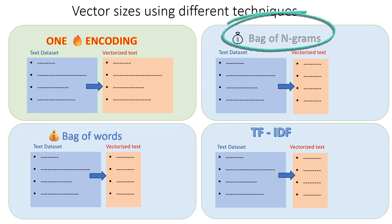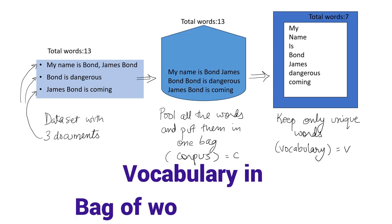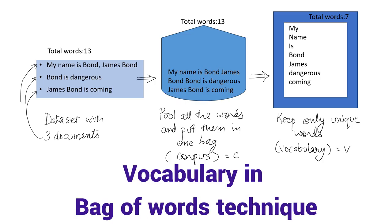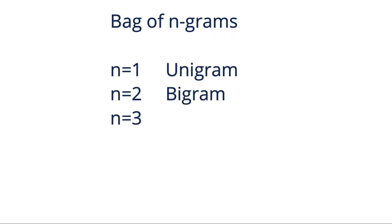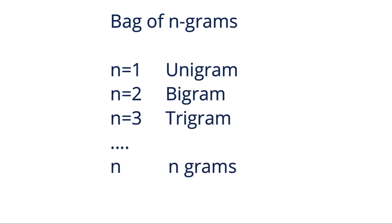The bag of n-grams technique is the same as the bag of words technique, but we have to do one small thing while creating our vocabulary. We can choose n equal to 2, 3, or 4. Let us see how we can do it for bigrams.